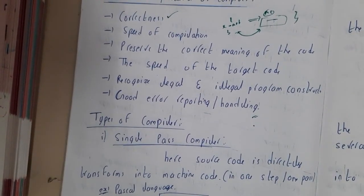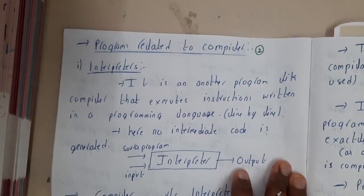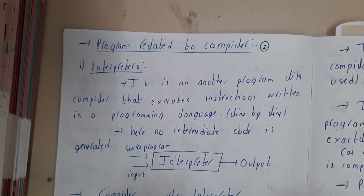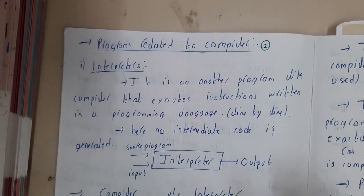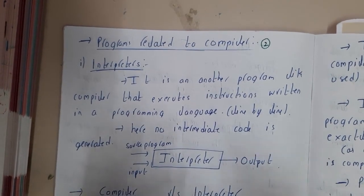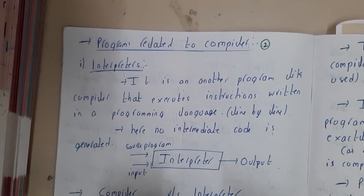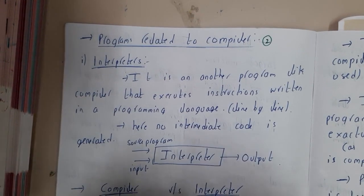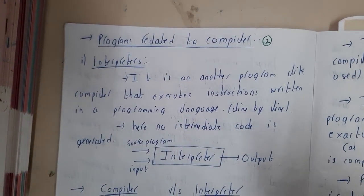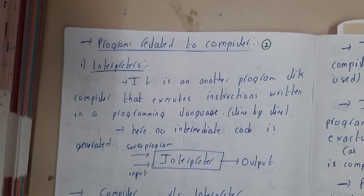So I hope everyone got a basic idea about the translator and the compiler, and we also discussed the types of compilers. In the next lecture we will be going through other topics related to compilers like interpreter and assembler — these are popular terms that we commonly get confused about. We'll be discussing them in the next lecture. Thank you for watching.